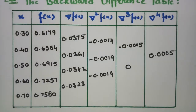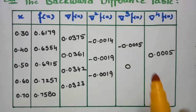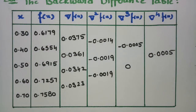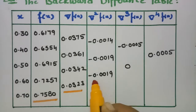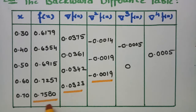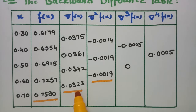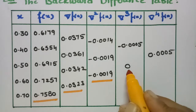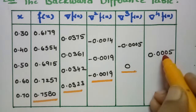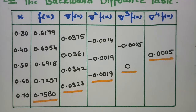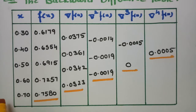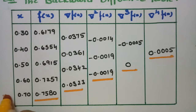For Newton's forward formula I take all the front values, but now for backward I am selecting all the backward values. This will be y_n, delta y_n, delta² y_n, delta³ y_n, and delta⁴ y_n. These are all the values which I have to select, and the corresponding x value will be x_n.